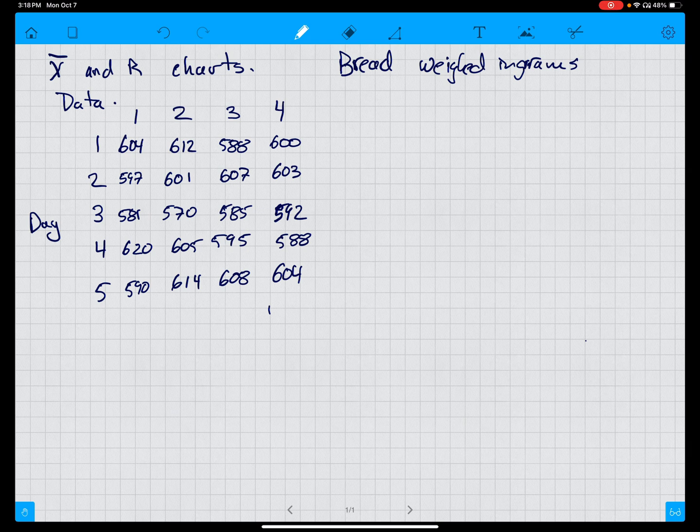In this case, we have a bakery that is looking at whether they are consistently baking consistent loaves every day. Every day they take a sample of four loaves and weigh them in grams, then want to develop a statistical process control chart that will allow them to decide whether they are being consistent. This is five consecutive days with four samples in every case.